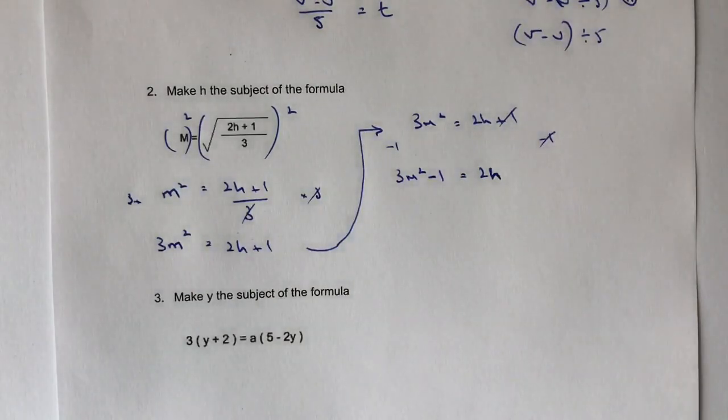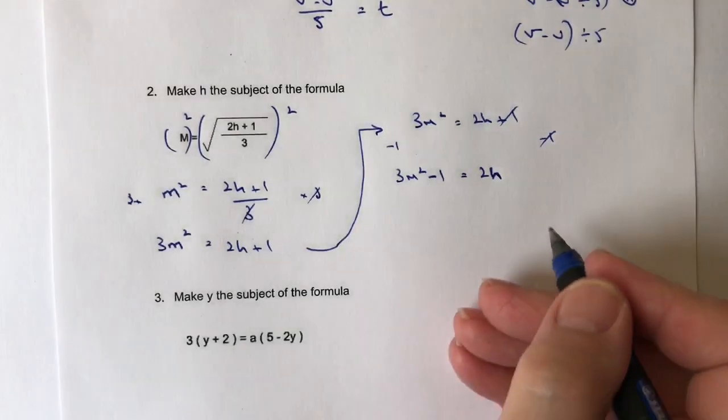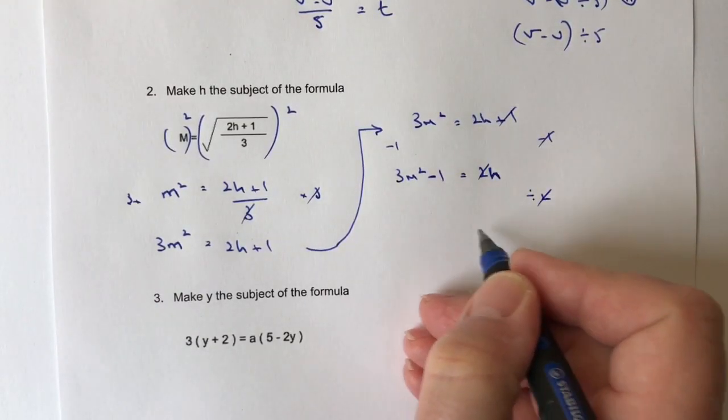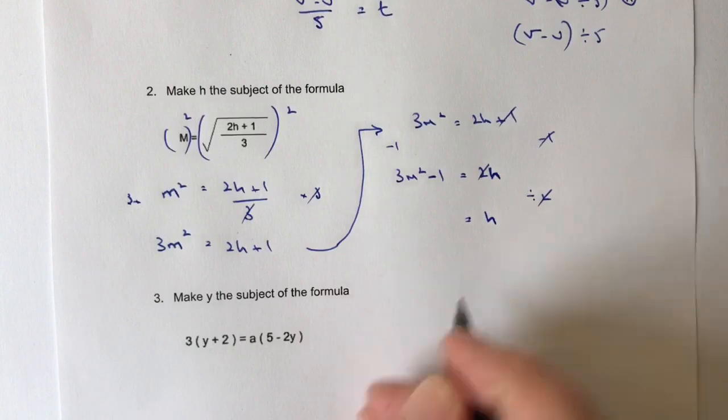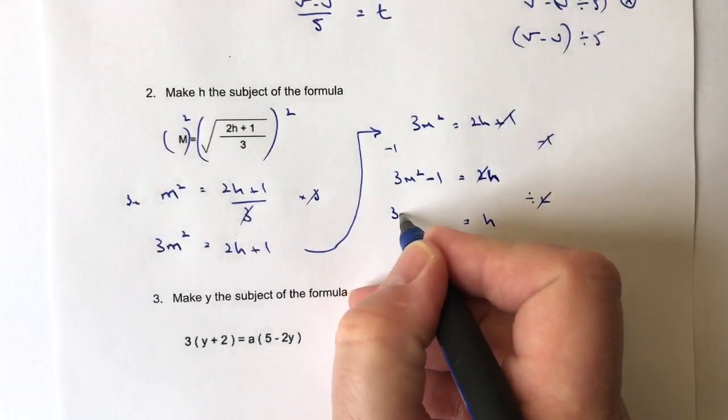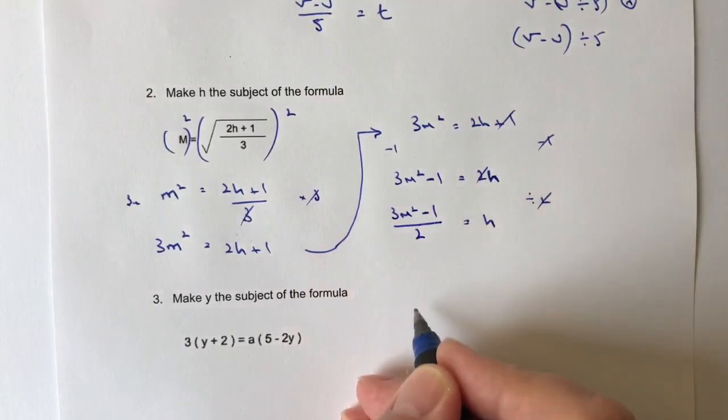OK, now at the moment, I've got 2 lots of h, so to get 1 lot of h, I need to divide both sides through by 2. If I divide this by 2, 2 divided by 2 gives me h on its own, which is what I'm looking for. On the left-hand side, I would write that as 3m squared minus 1, all divided by 2.